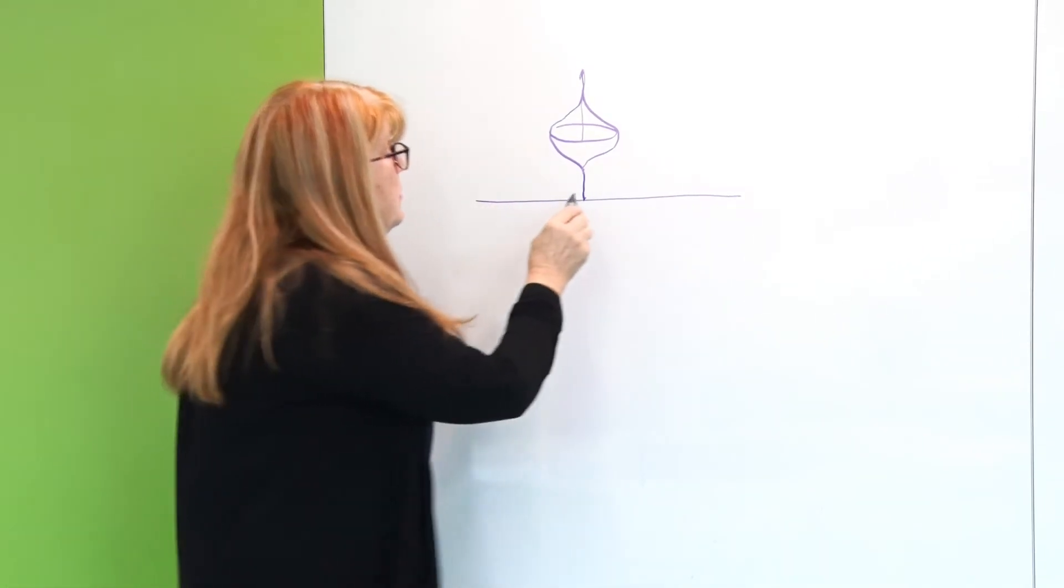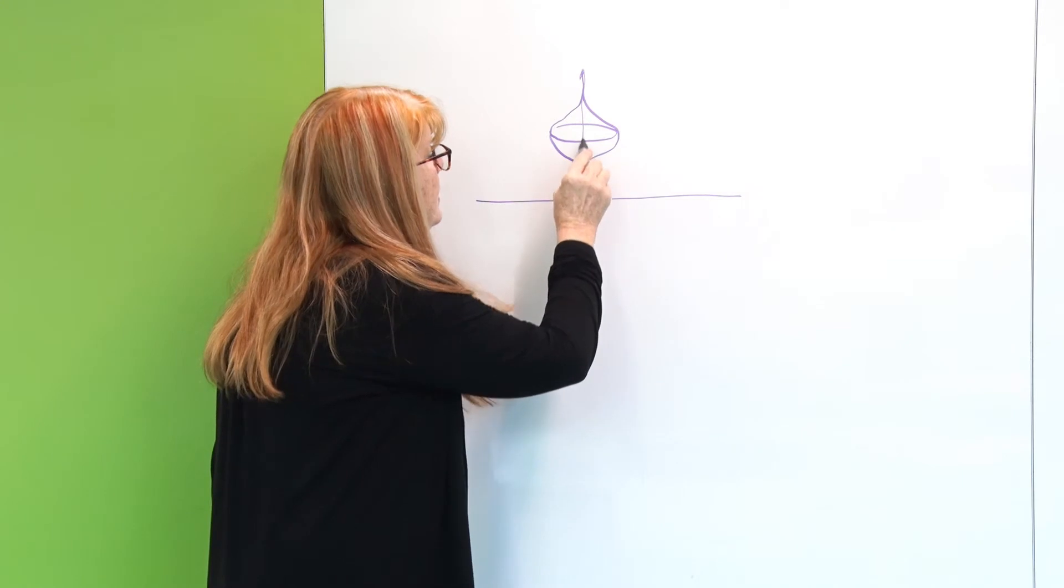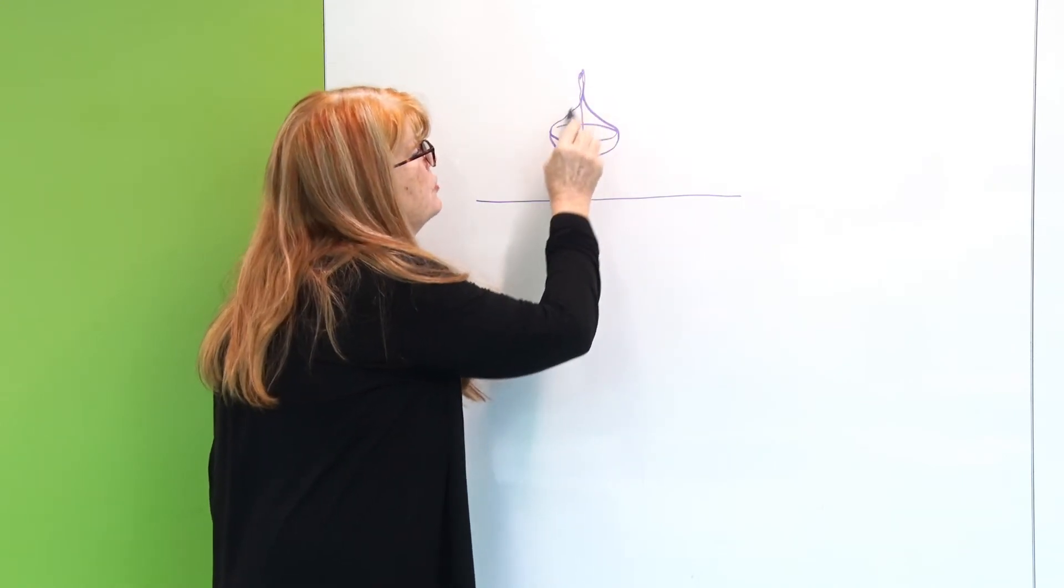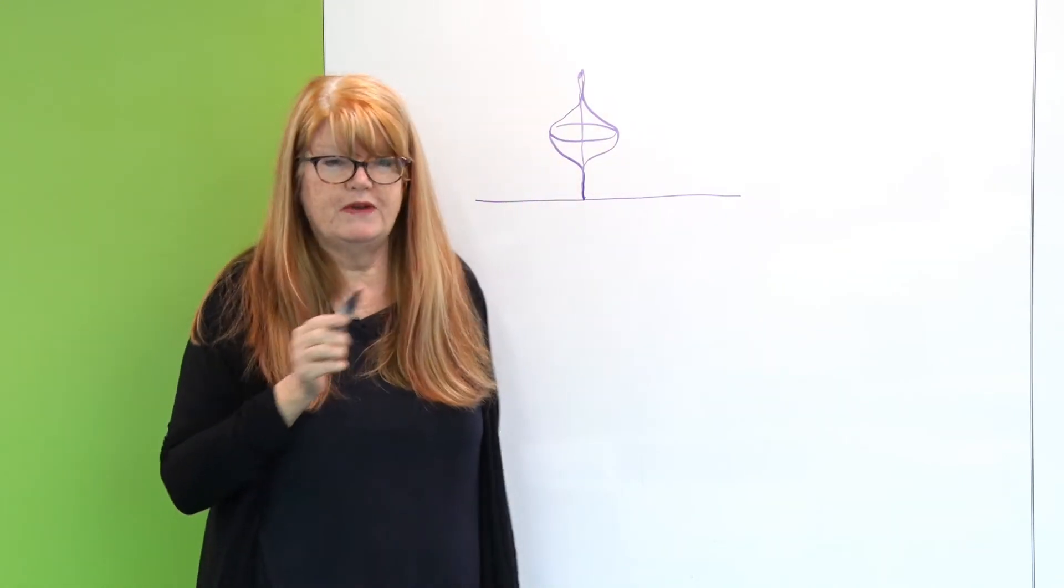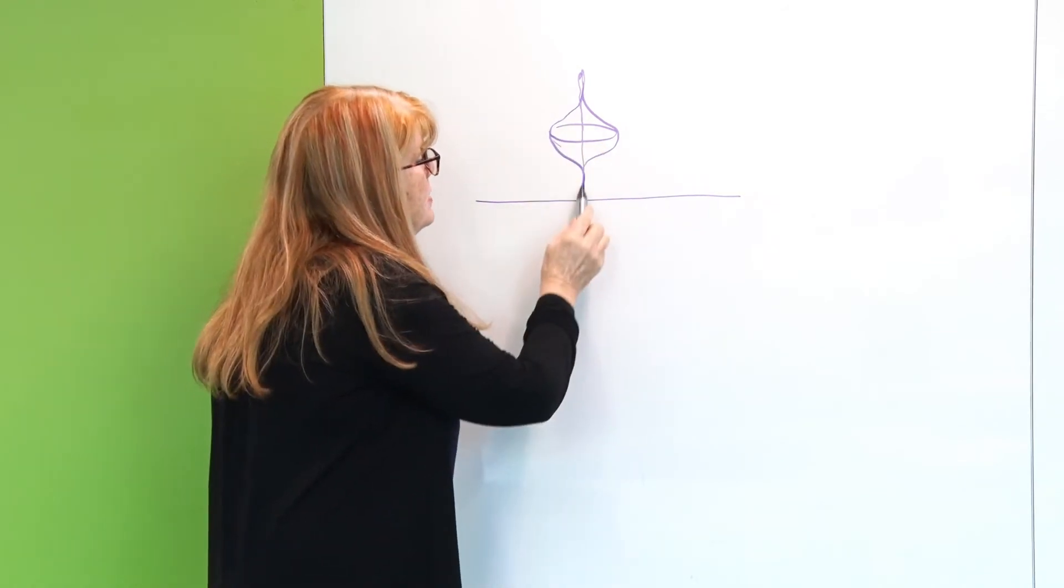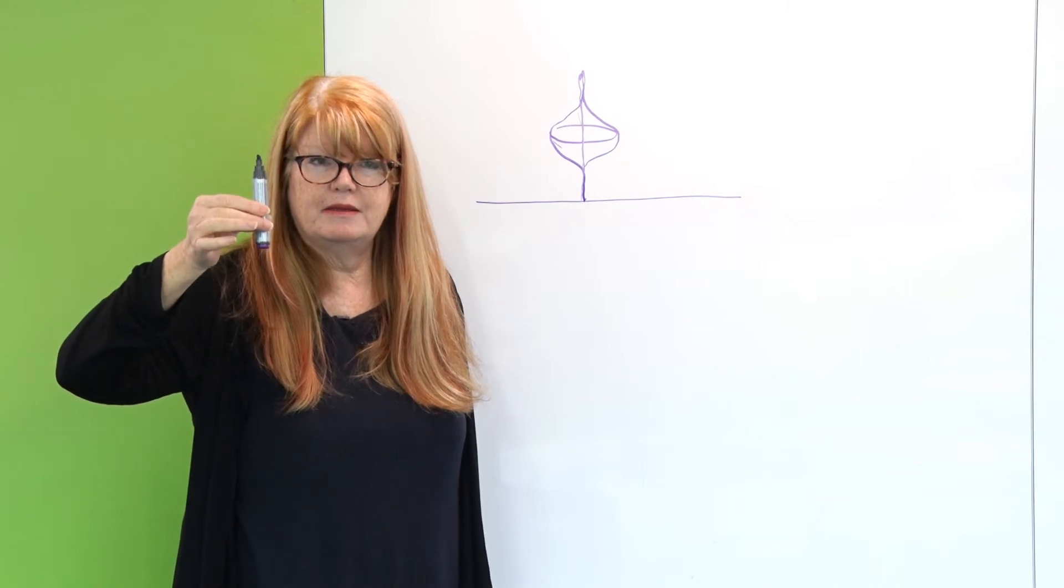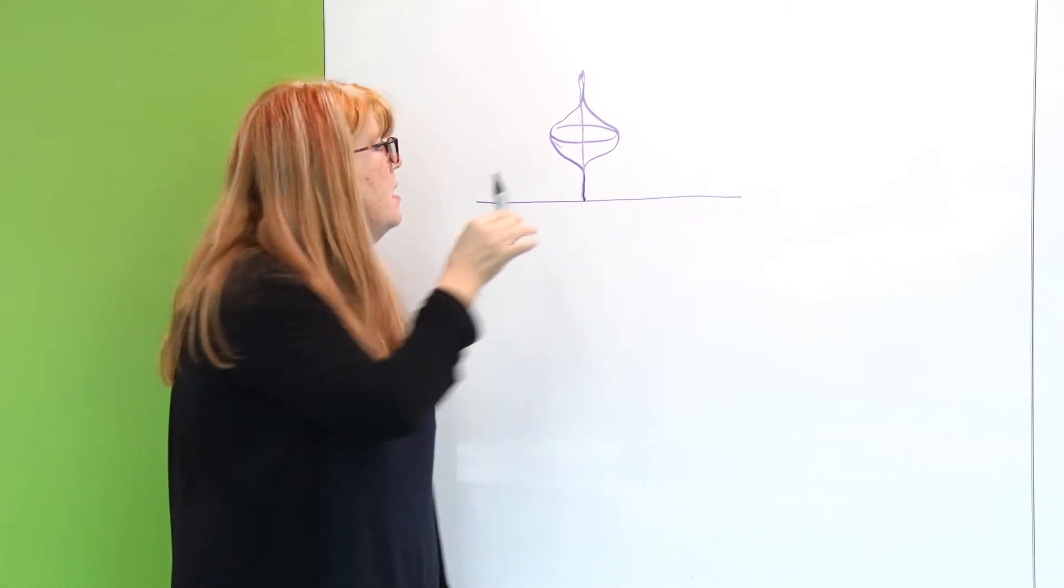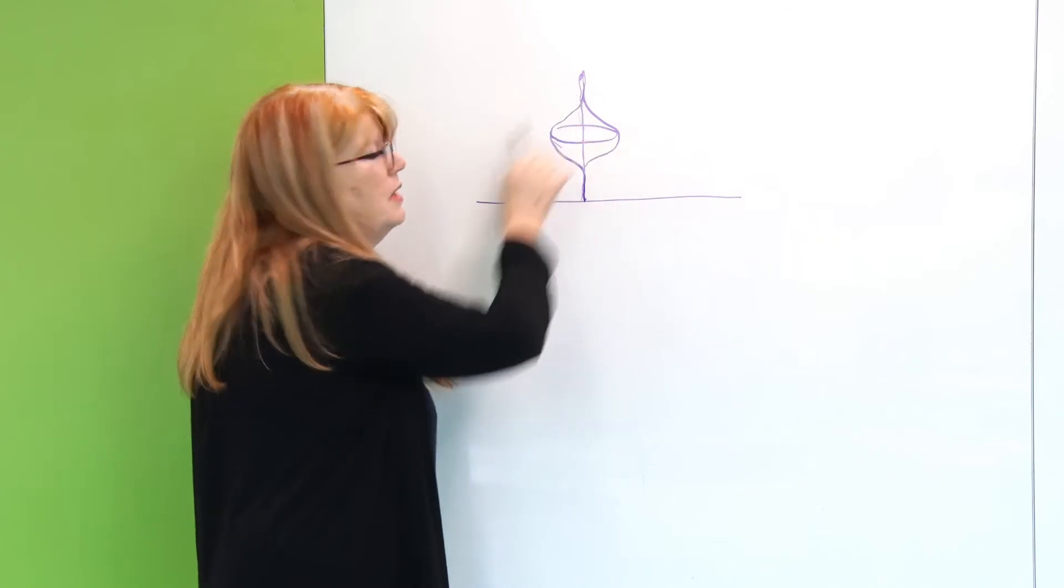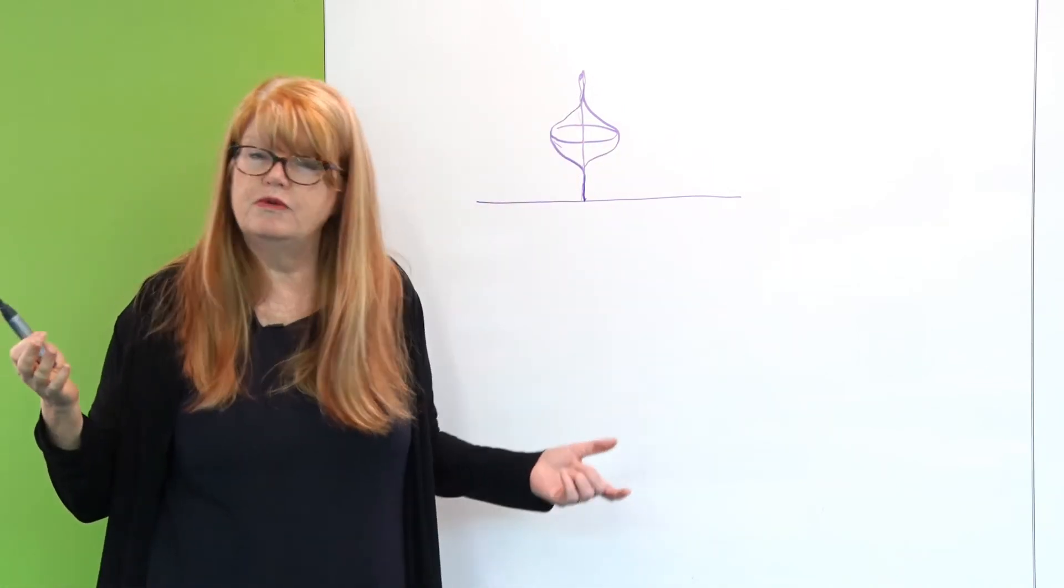If I could put it perfectly, perfectly upright and if the top was perfectly, perfectly symmetric around this axis, it would just stand there. But the slightest little touch and what happens? You know what happens? It falls over